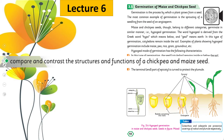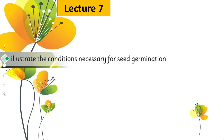Then we will move forward towards lecture number six, where the students will be able to compare and contrast the structures and functions of chickpea and maize seeds. Hum maize seed aur chickpea seeds jo hain unke darmian comparison kareenge — their structure, how they differ.